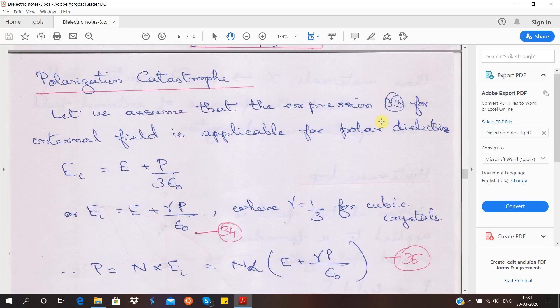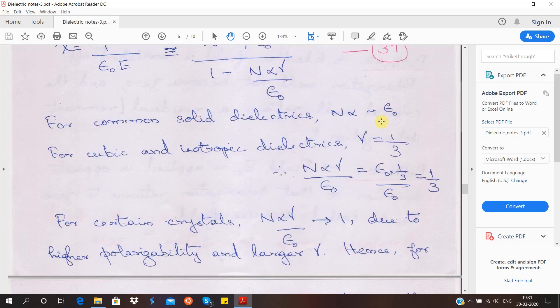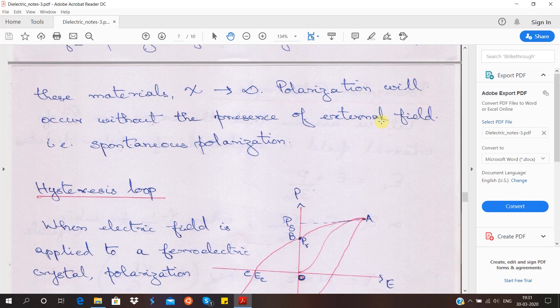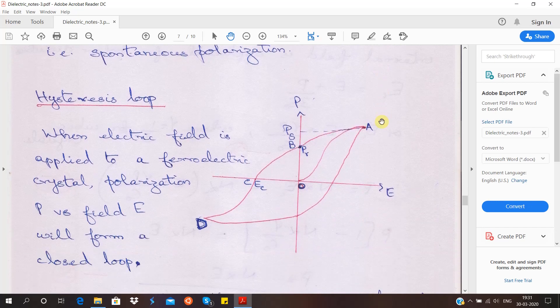There is a section on polarization catastrophe. You can just ignore that. That basically covers how the material behaves when spontaneous polarization occurs.